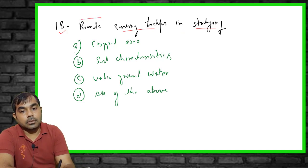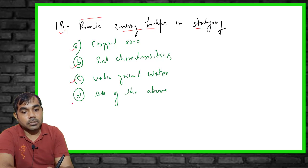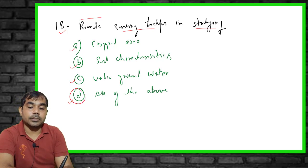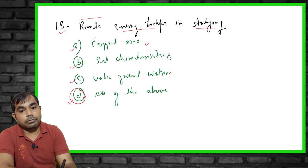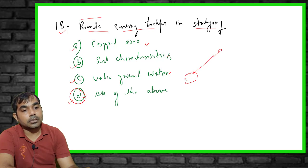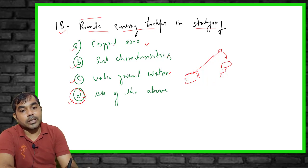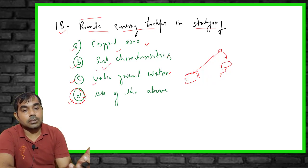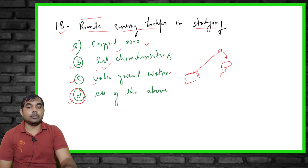The eighteenth question: remote sensing helps in studying what? Options include cropped area calculation, soil characteristics estimation, groundwater estimation, and all of the above. The right answer is D — all of the above. Remote sensing is a tool that gathers information from a distance via satellite without touching the object. The data is analyzed by computer to estimate cropped area, soil characteristics, and groundwater levels.